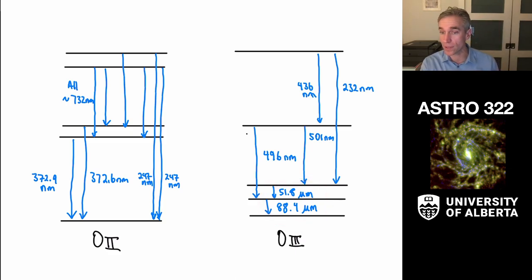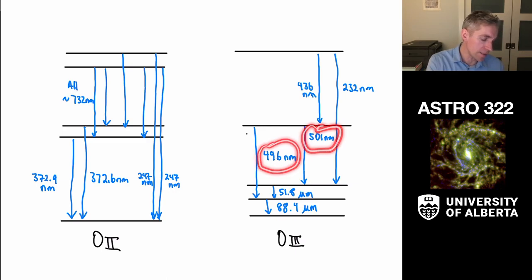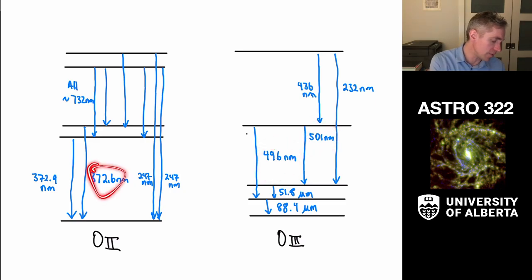These are not the only electronic states, but these are the ones that are most readily excited by collisions with electrons in the ISM. And so this shows that these are optical photons that are being kind of coupled out, 500, 496, 372.